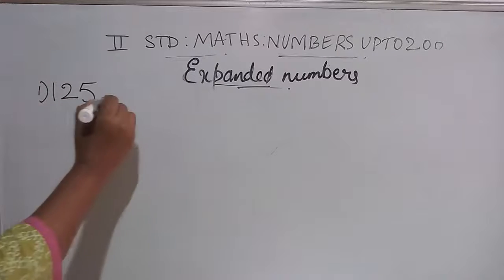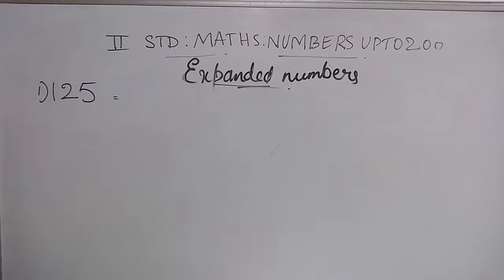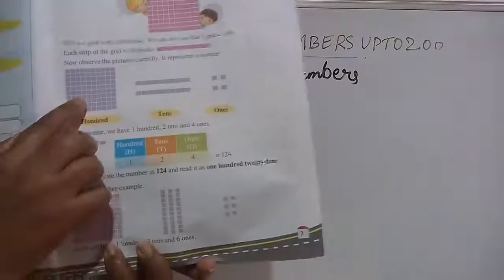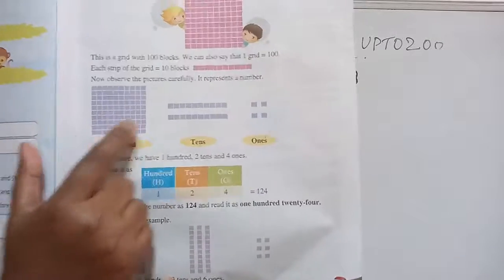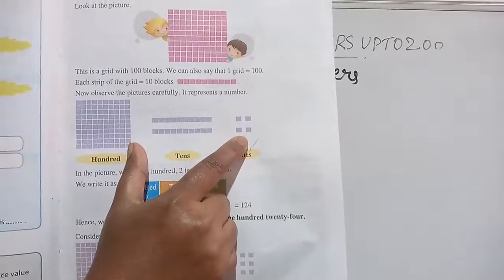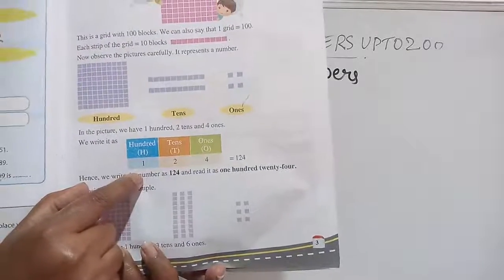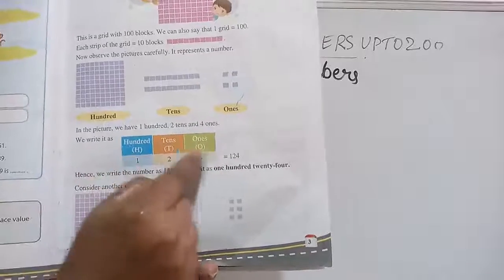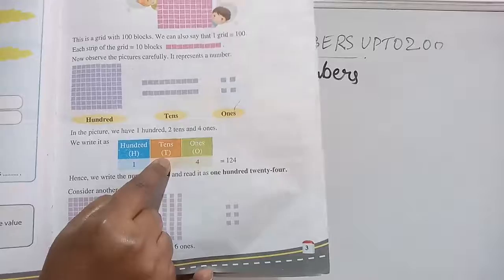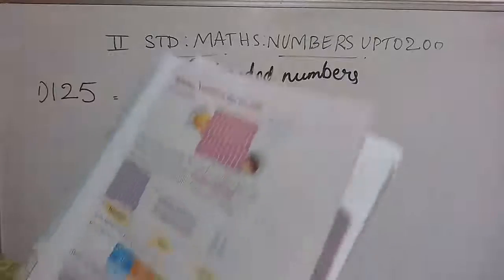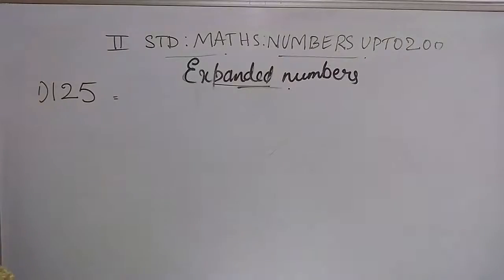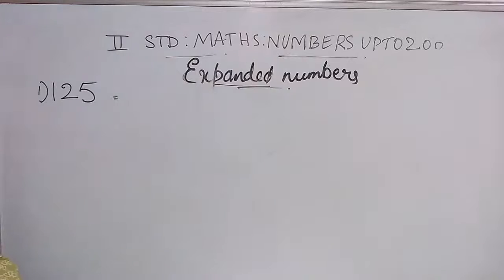Now for this, let me write a very small place value chart. I have showed you in the previous classes these things. You remember we had small boxes of 100, 10s and 1s and this is how we wrote the numbers also. We learned to fill the numbers in these columns. In the same way with the help of this, we will be learning to write numbers in expanded form also.